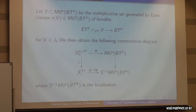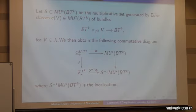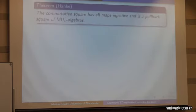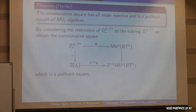We get a commutative diagram where we have the universal toric genus going across the top, restriction to the normal data around the fixed point sets coming down on the left, a localization map on the right, and a map going across the bottom. All the maps here are monomorphisms. Hank showed that not only are all the maps injective, it's also a pullback square, around 2005. Restricting back to our case, we also get that this is a commutative pullback square, where now on the left we're mapping into polynomial algebra.